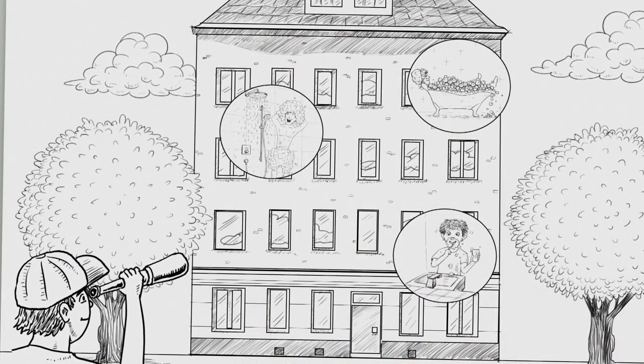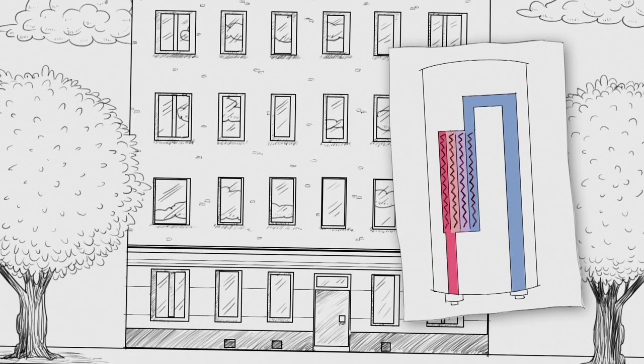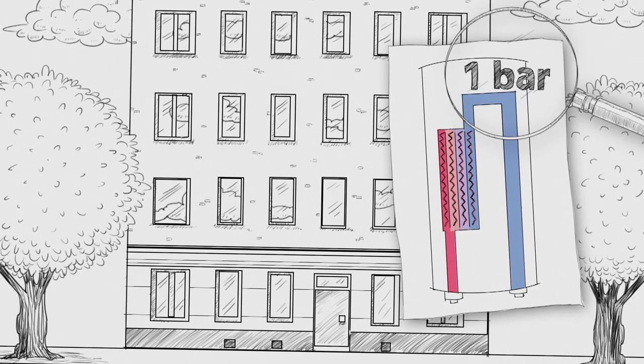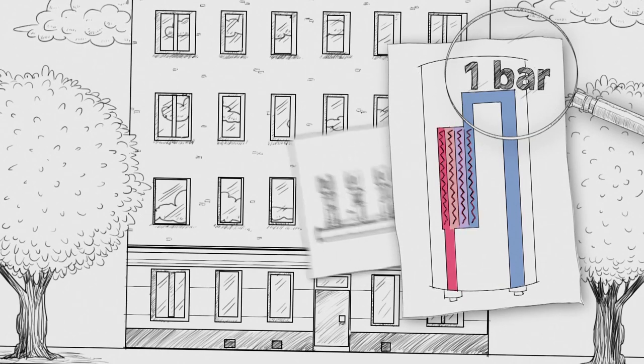The water pressure in the system also plays an important role. For this, we will take a look at the installation room. To function, our appliances need a supply pressure of at least one bar. If this isn't available in your area, a pressure booster station needs to be employed.